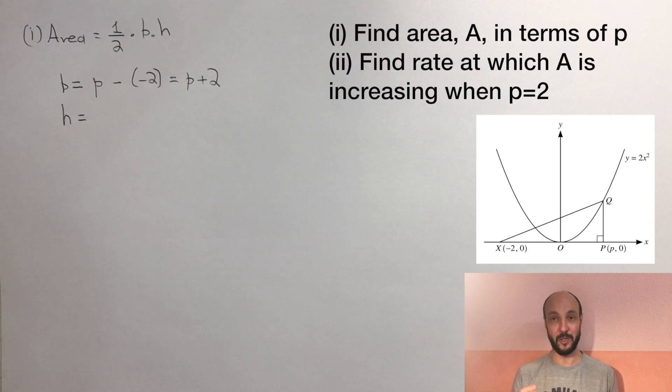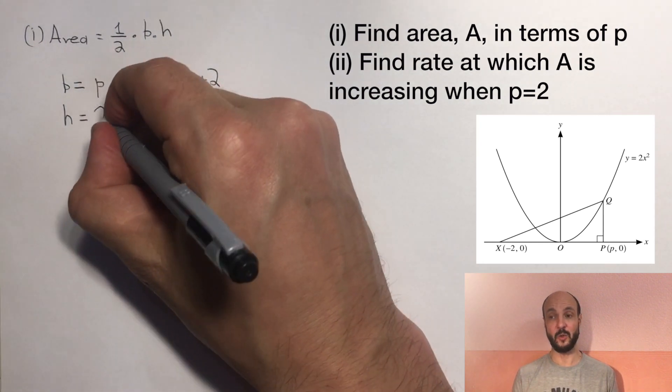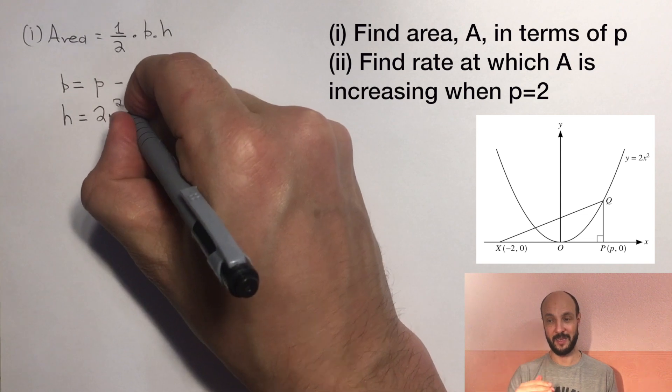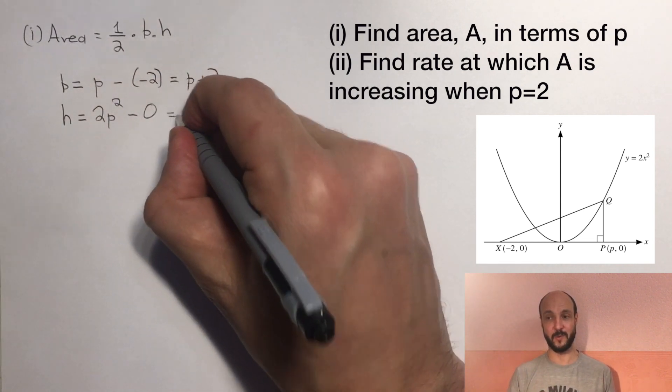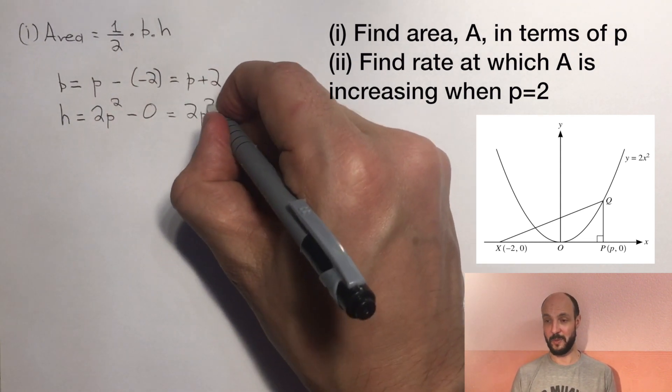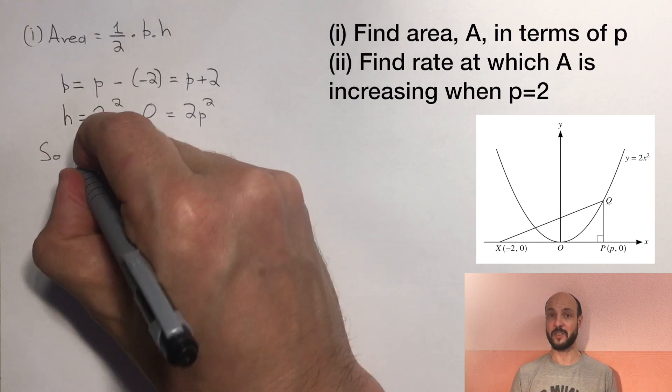So what we can say is the point q has x coordinate p and y coordinate 2p squared. So if we're thinking about the height, it's the difference between the y coordinates, 2p squared minus 0, so it's 2p squared.